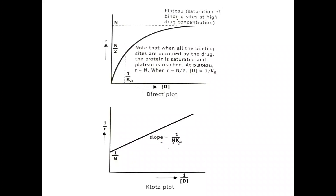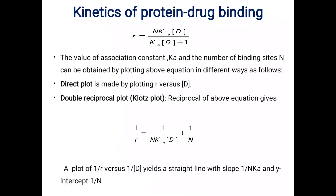This is all about protein drug binding. The key equation to remember is r equals n·Ka·D divided by (Ka·D plus 1). By determining the value of association rate constant Ka as well as n, we will come to know about the dose of the drug. Thank you.